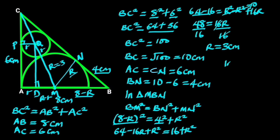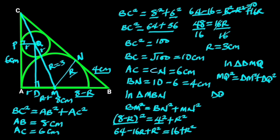Also, in triangle DMQ, we will use Pythagoras' theorem to find DQ. From Pythagoras' theorem, MQ² equals DM² plus DQ². Making DQ² the subject of the formula gives us DQ² equals MQ² minus DM². From the figure, MQ is the radius of the semicircle plus the radius of the circle.